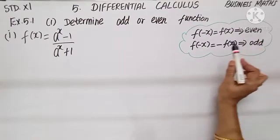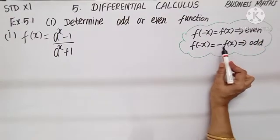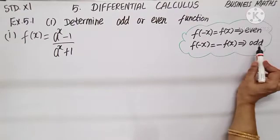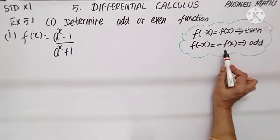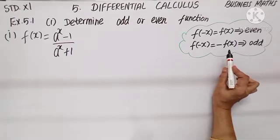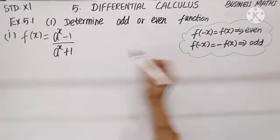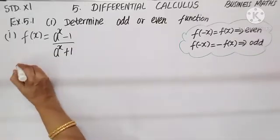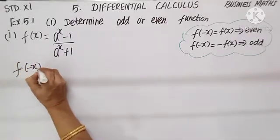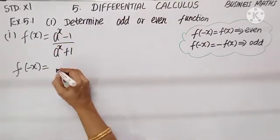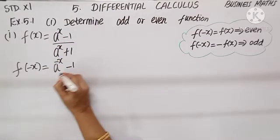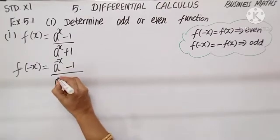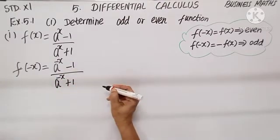If the sign changes, it is odd. But if I don't get either f(x) or minus f(x), then we will declare it is neither even nor odd. So in this problem, let us find out f(-x). Wherever x is coming, we substitute: a to the power minus x minus 1, divided by a to the power minus x plus 1.